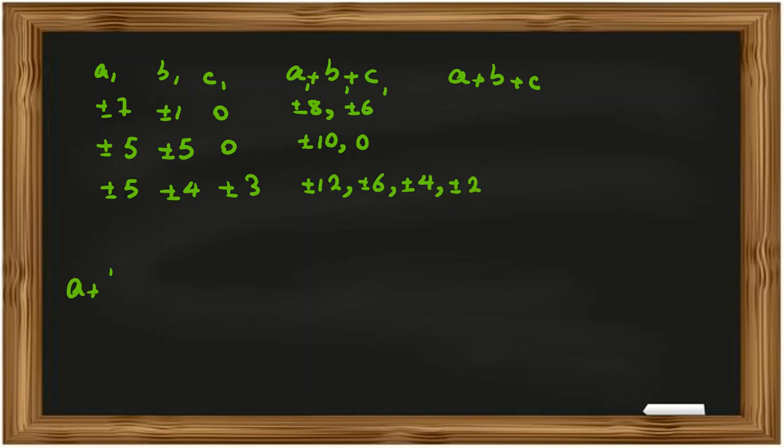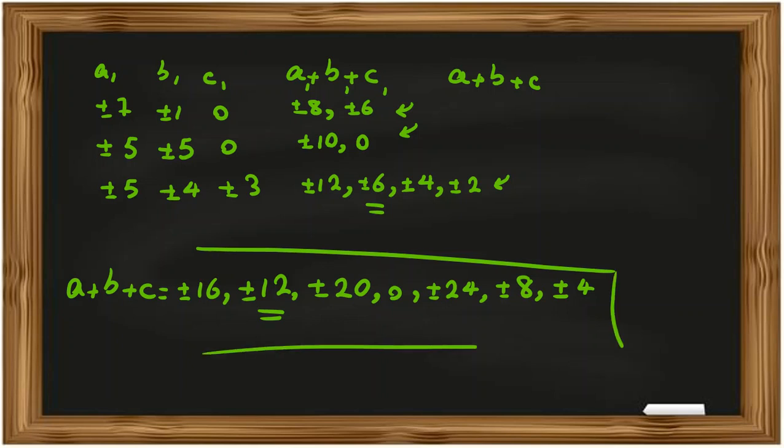So, if we consider all possible cases for a plus b plus c, we should consider twice of that. Plus minus 16, plus minus 12, plus minus 20, 0, we are multiplying these cases by 2. Because a is 2a1, b is 2b1, c is 2c1. Plus minus 24, the next one, plus minus 12, we've considered here. So, plus minus 8, and plus minus 4. Okay, so we found all possible cases for a plus b plus c.